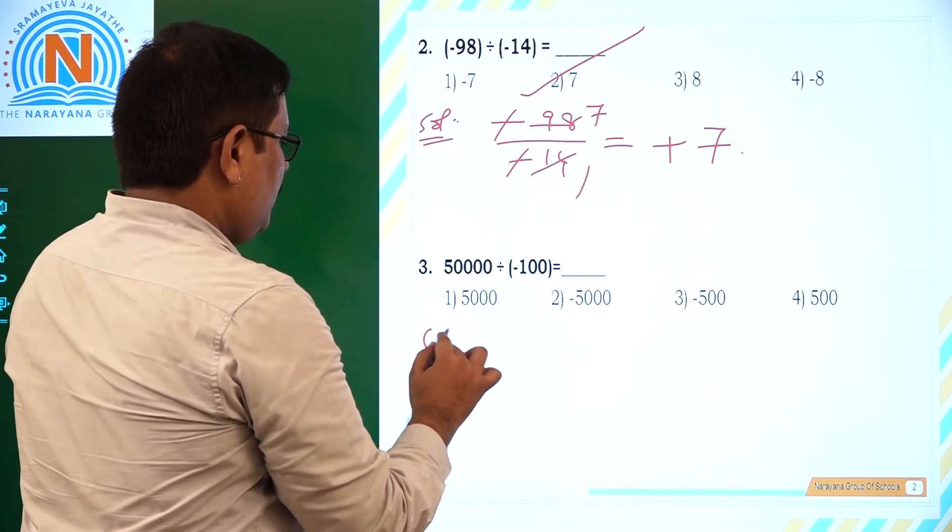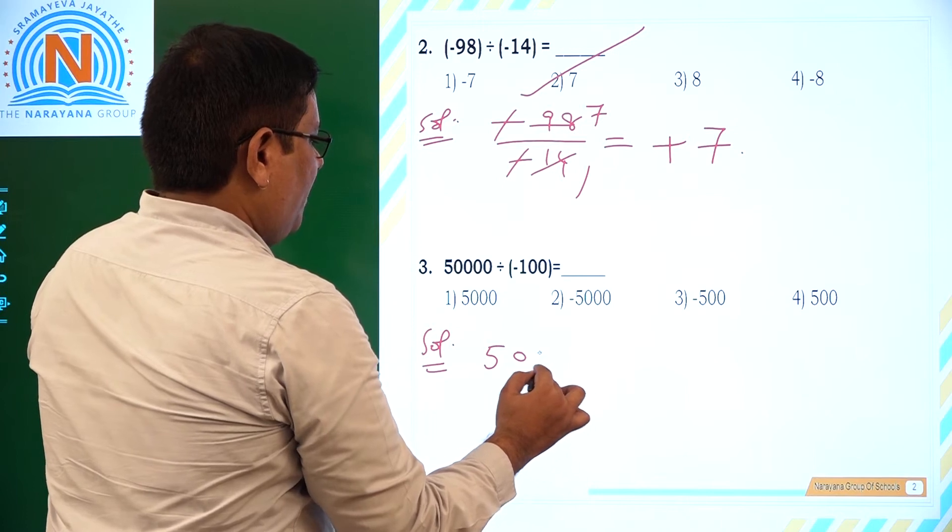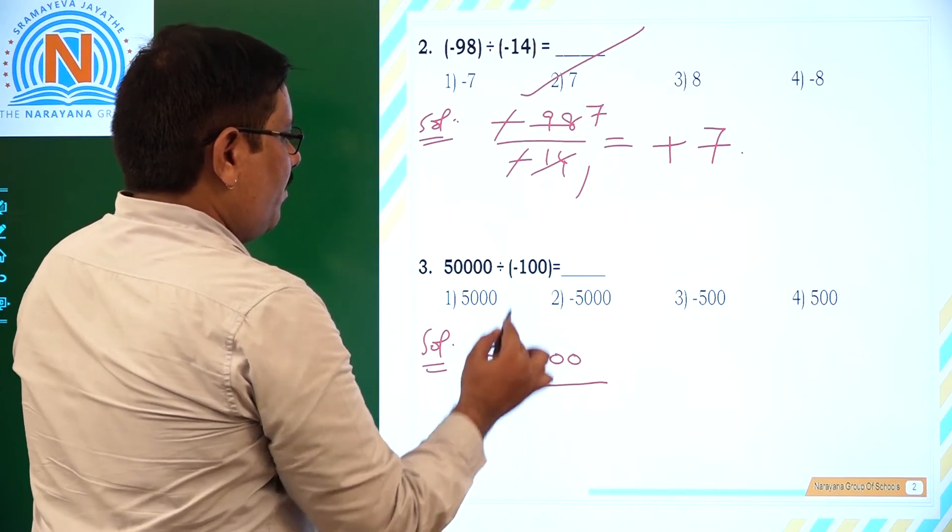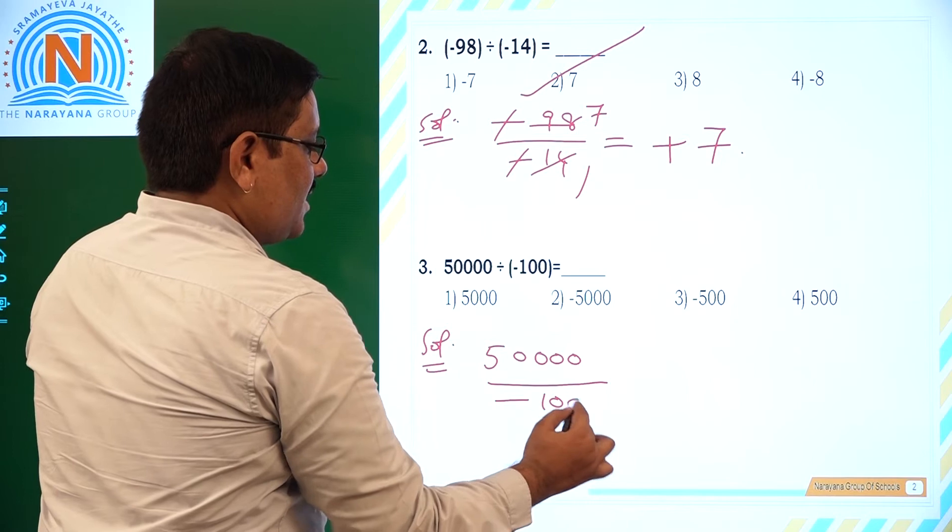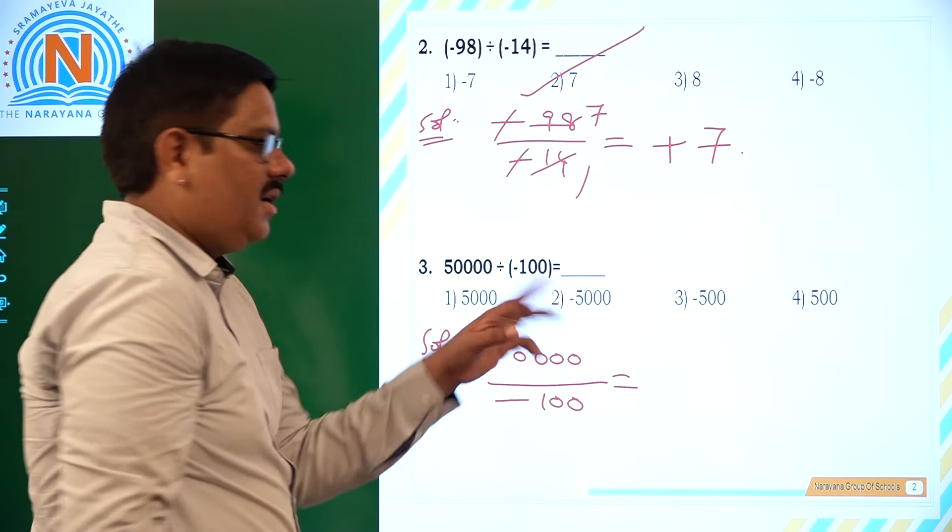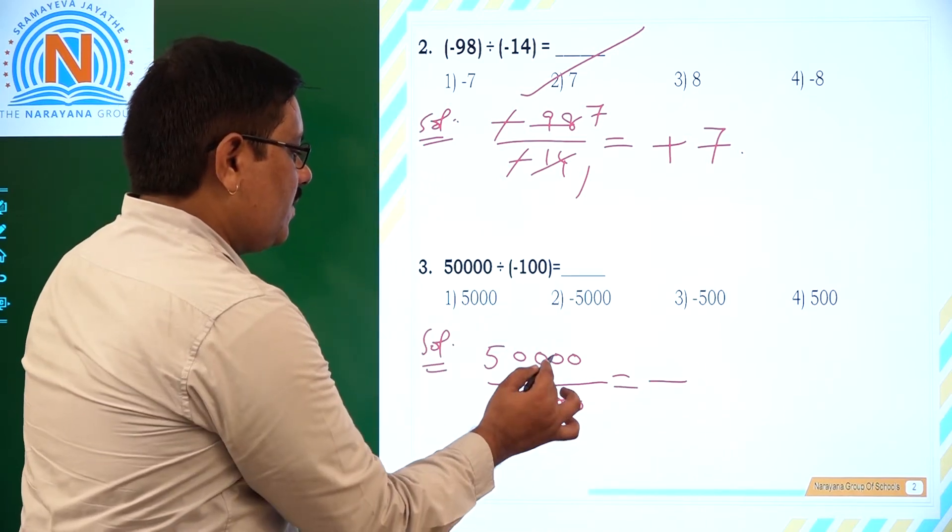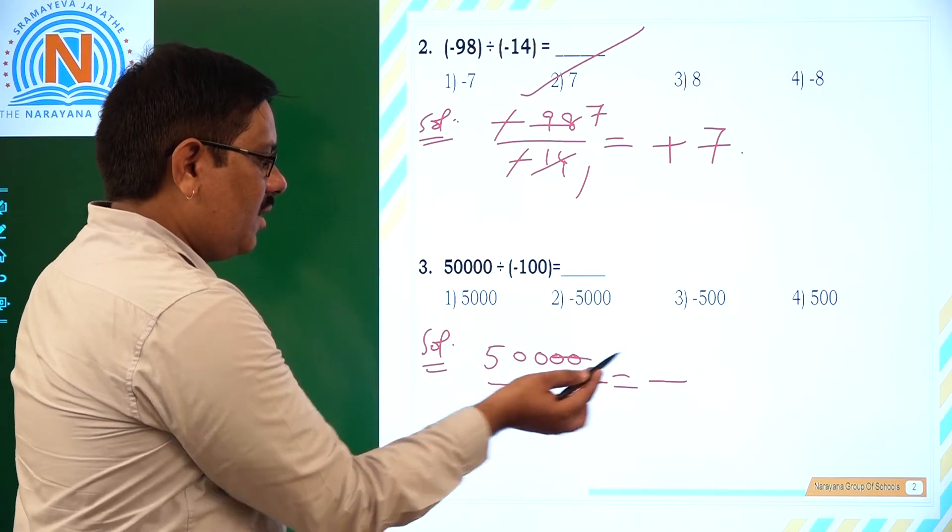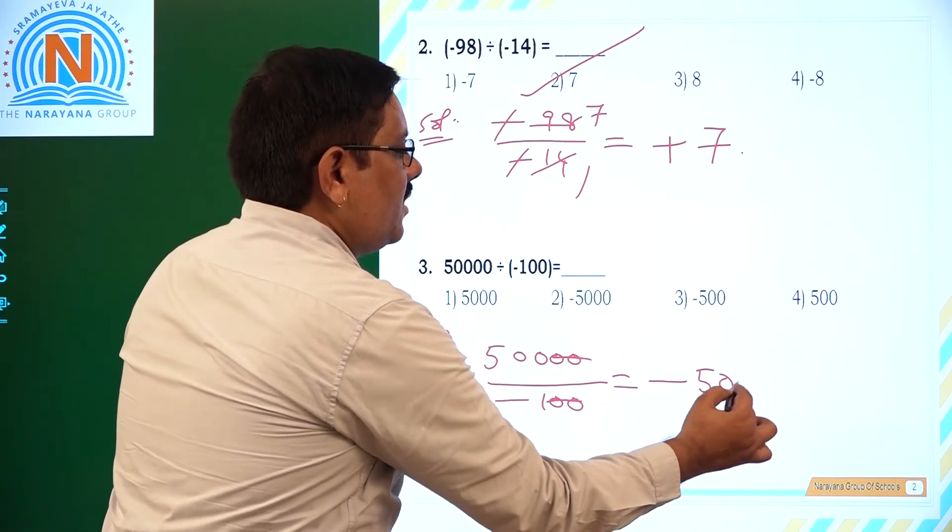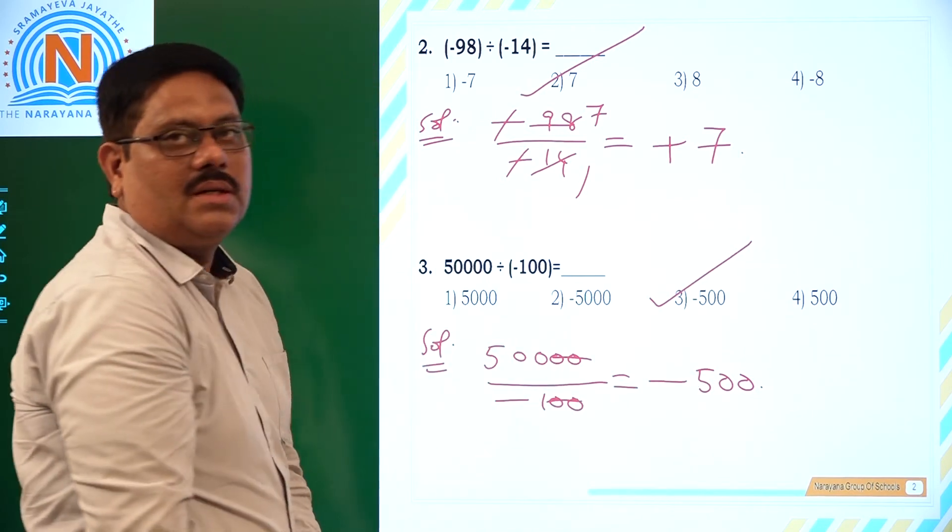Now let us see the third question. We have 50,000 divided by minus 100. As I told you, whether the minus sign is in either numerator or denominator position, it applies to the whole fraction. Here zeros we can cancel. So this is 500 upon 1, which is simply 500. So minus 500 is the third option.